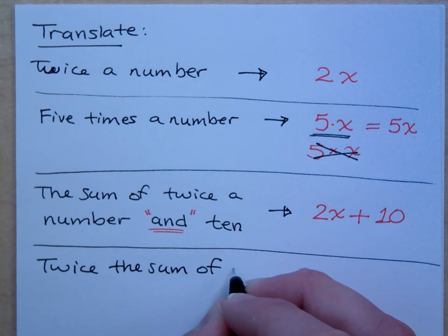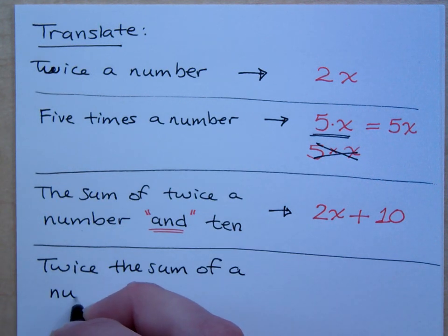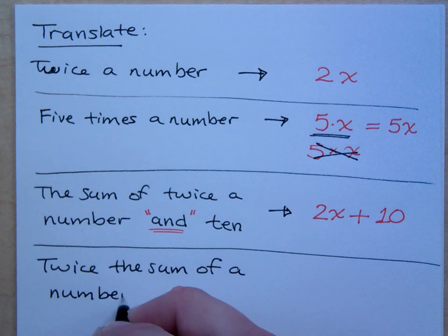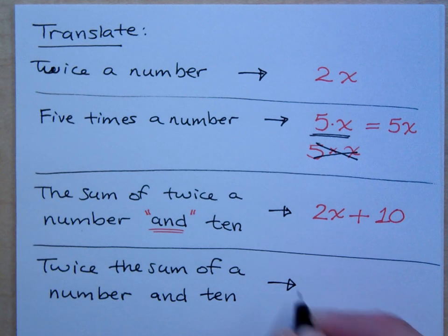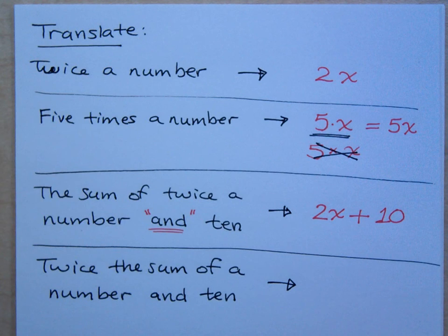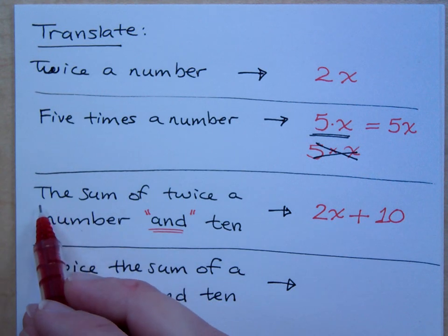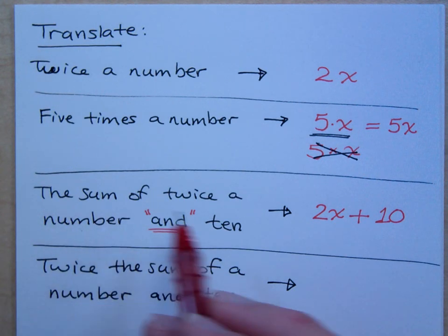So what if I do twice the sum of a number and ten? How does that translate? Or is it the exact same thing that I just had up here? Is it the same? Kind of. It's very similar, but the word order has changed now, right? In the last example, I said the sum, so that meant we automatically started with addition.